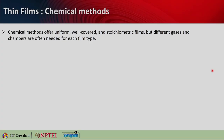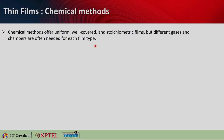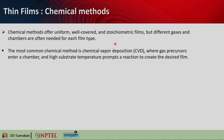Now let us look into the chemical methods of depositing thin films. Chemical methods deposit thin films as a byproduct of some chemical reaction. Chemical methods offer uniform, well-covered and stoichiometric films. However, different gases and chambers are often required for each type of film, making it very specific and also costly if you are experimenting with different films using different gases — you need different chambers for different film types.